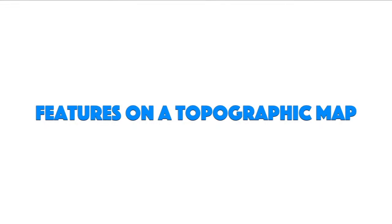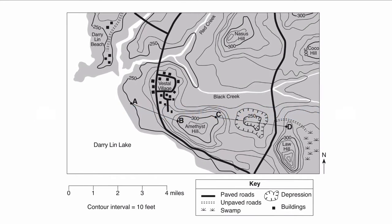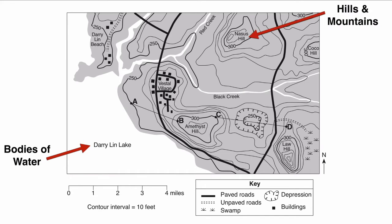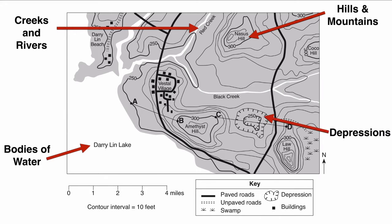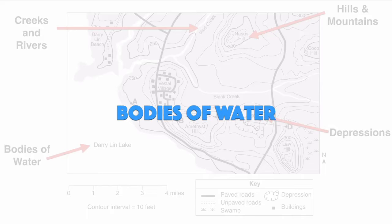Features on a topographic map. This video is going to focus on four features that are almost always associated with topographic map questions: bodies of water, hills and mountains, creeks and rivers, and depressions. Let's begin with bodies of water.